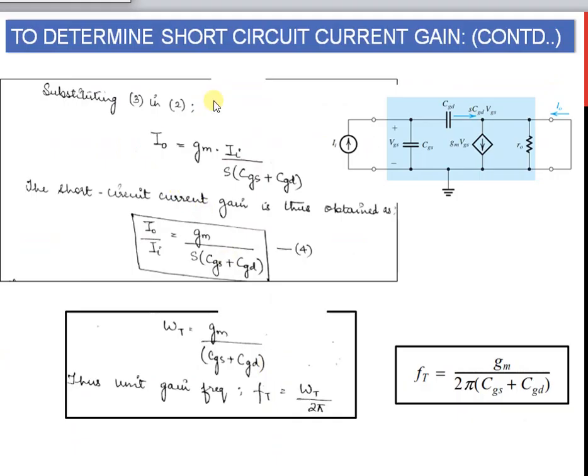Substituting equation 3 into equation 2, we obtain I0 equals gm times II divided by s times (CGS plus CGD). The short circuit current gain is obtained as the ratio of output current to input current, which equals gm divided by s times (CGS plus CGD). This is equation 4.